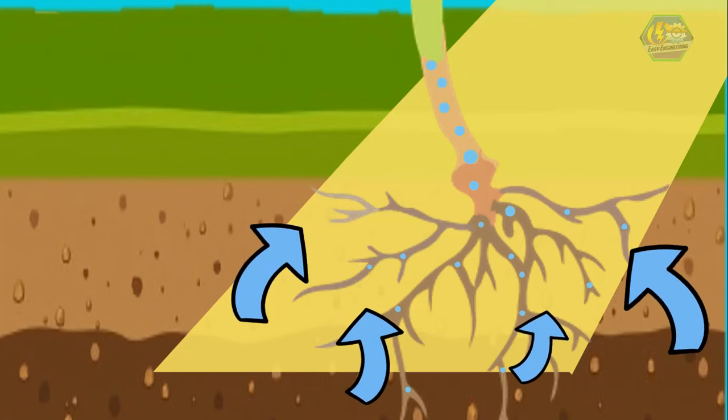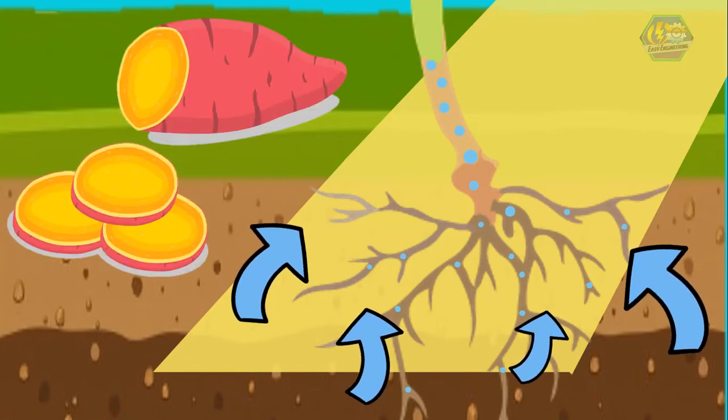The roots of a plant grow underground. Sweet potatoes are examples of roots that can be eaten.